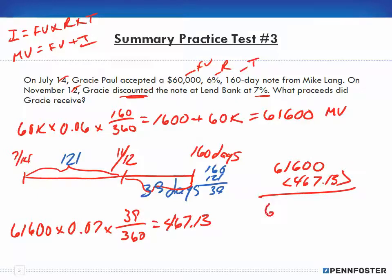We take the $61,600 and subtract the $467.13 that was discounted, and we end up with proceeds of $61,132.87. So we figured out: number one, the maturity value; number two, the discount period; number three, the amount of the discount; and number four, the proceeds.